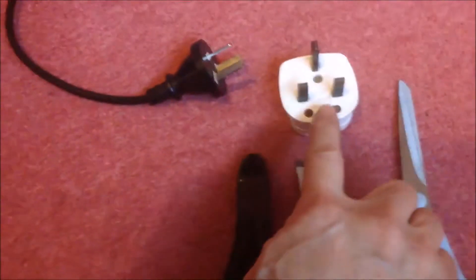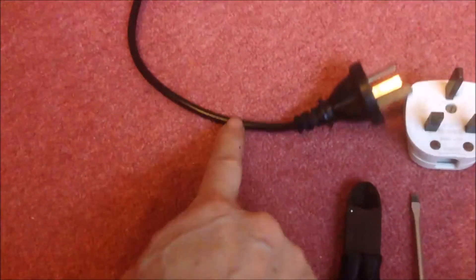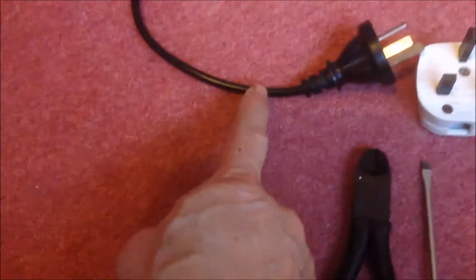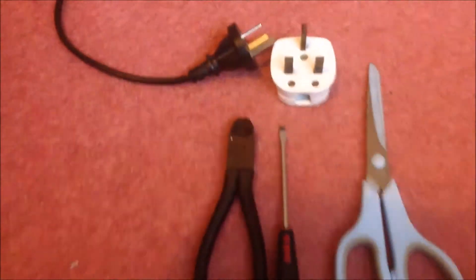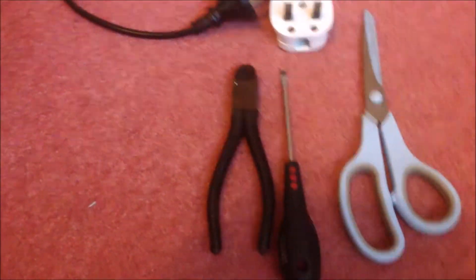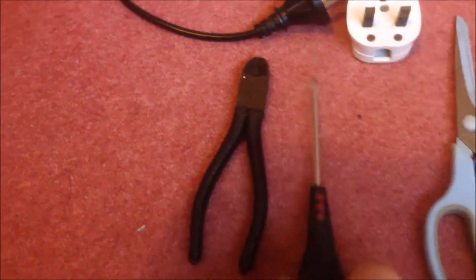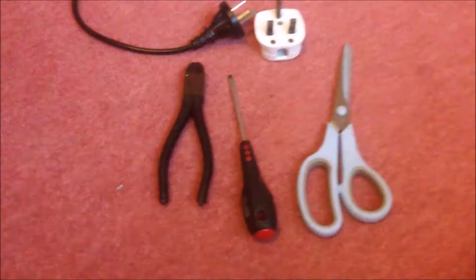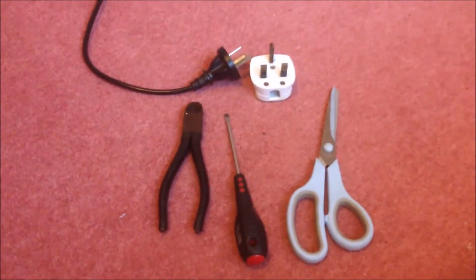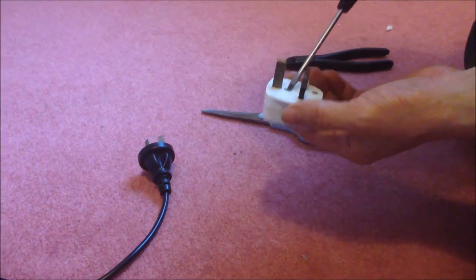In this video we're going to change this plug to the UK plug, so we're going to cut it off and get the wire out to put into this plug. The tools we're going to need are just a cutter or scissors, a screwdriver, a pair of scissors, and this UK plug.